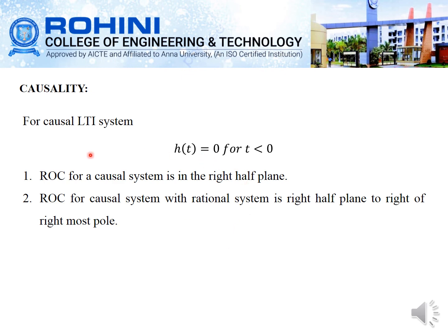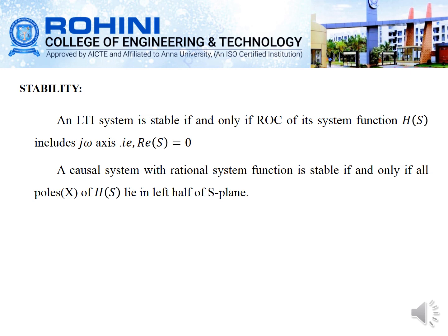For a causal LTI system, h(t) equals 0 for t less than 0. The ROC for a causal system lies in the right half plane, and for a causal system with a rational system function, the ROC is to the right of the rightmost pole. For stability, an LTI system is stable if and only if the ROC of H(s) includes the j omega axis, meaning the real part of s equals 0. A causal system with a rational system function is stable if and only if all poles of H(s) lie in the left half of the s-plane.